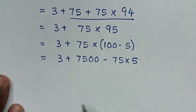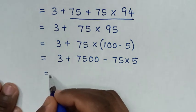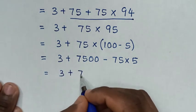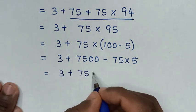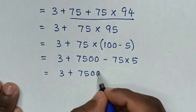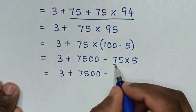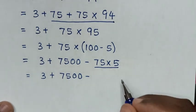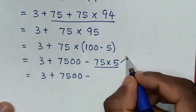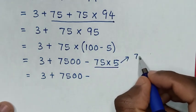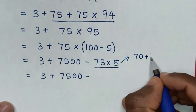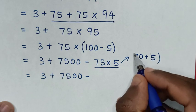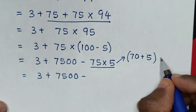Then it will be equal to 3 plus 7,500, then minus 75 times 5, where 75 is the same as 70 plus 5, in brackets, times 5.